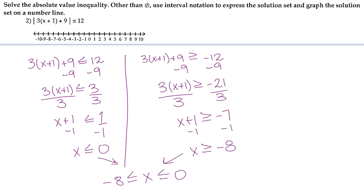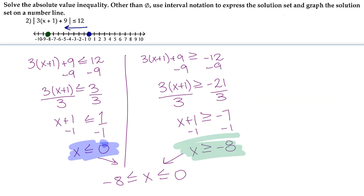Let's draw that on the number line — making the left hand side blue and the right hand side green. For x less than or equal to 0, the critical point is 0. Because it's less than or equal to, it's a closed circle going towards the left. For x greater than or equal to negative 8, the critical point is negative 8, also a closed circle, going towards the right.